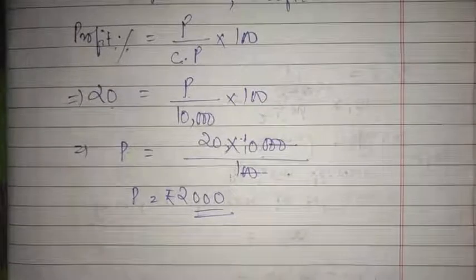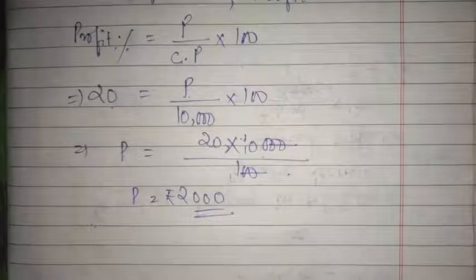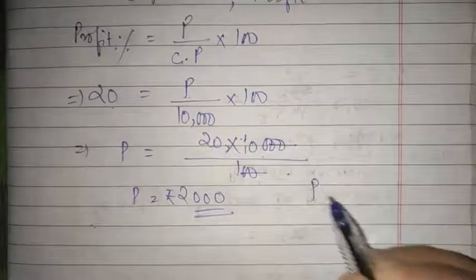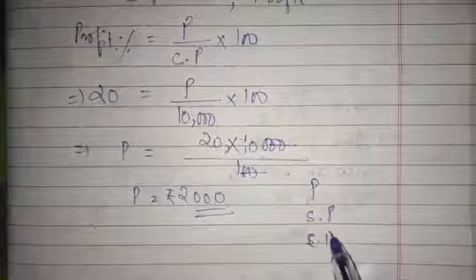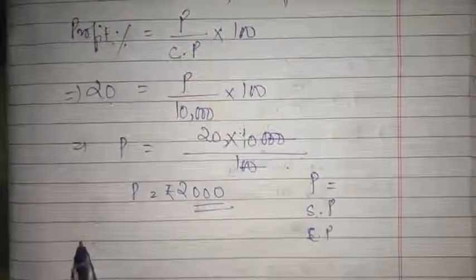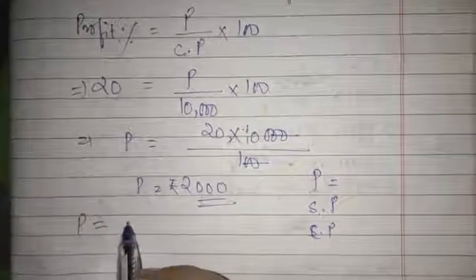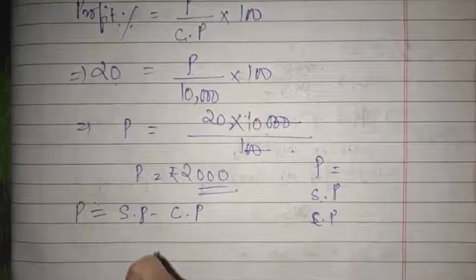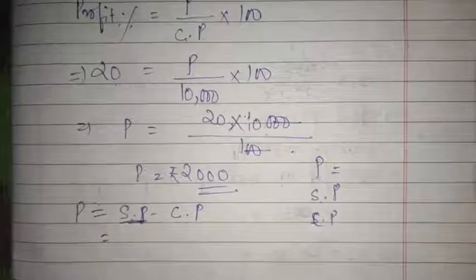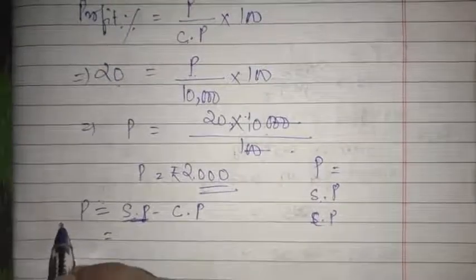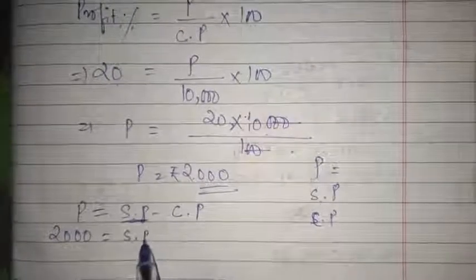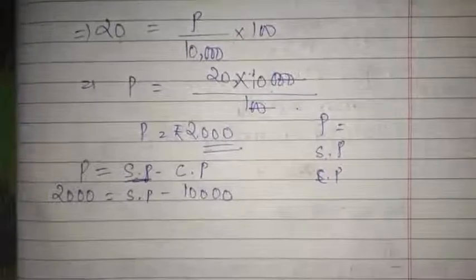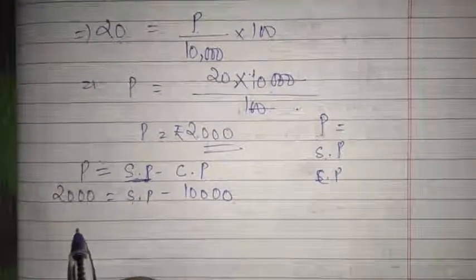The formula to find SP when profit and CP are known is: Profit = SP − CP. Profit is 2,000, SP is what we need to find, and CP is 10,000. Rearranging: SP = Profit + CP, so 10,000 will move to the other side and become positive.